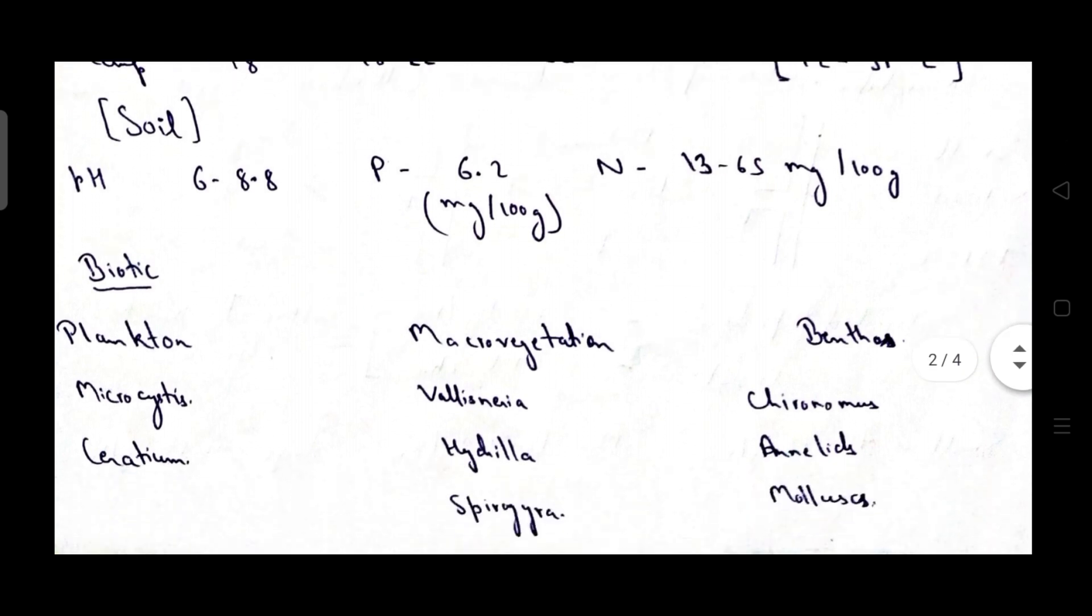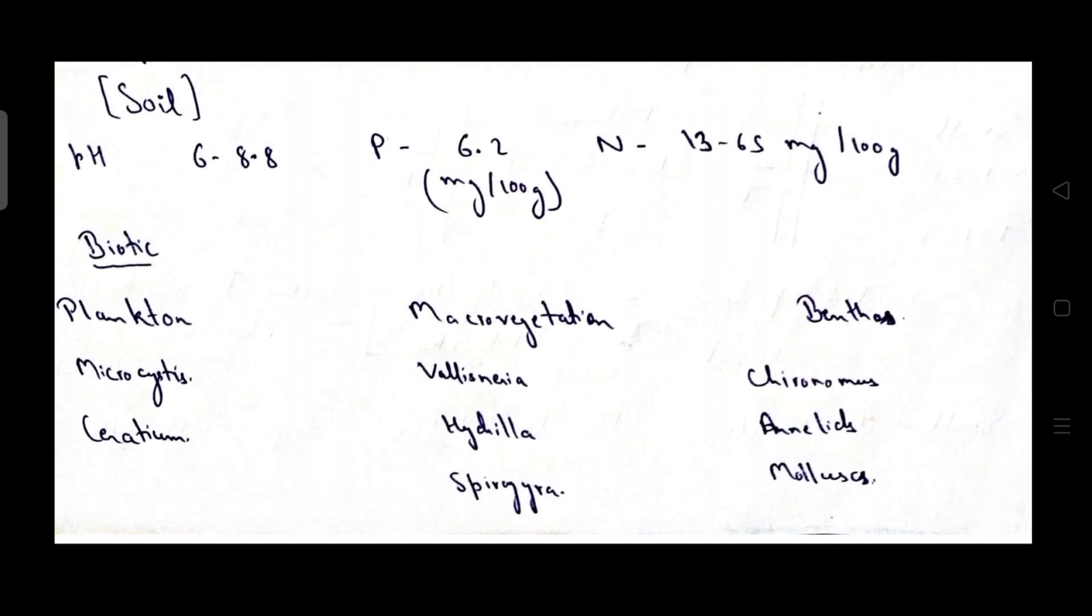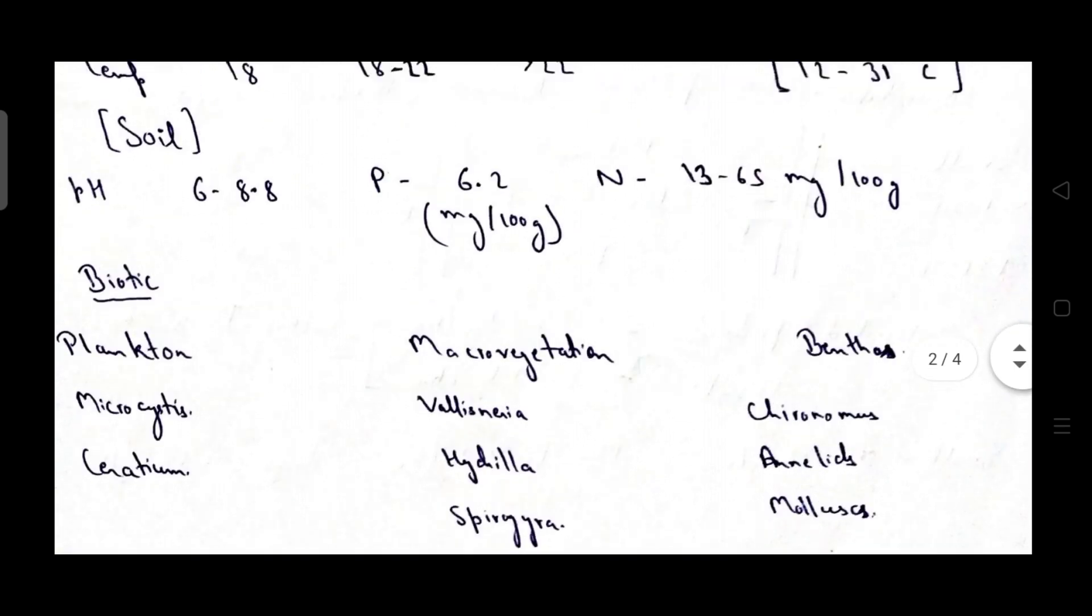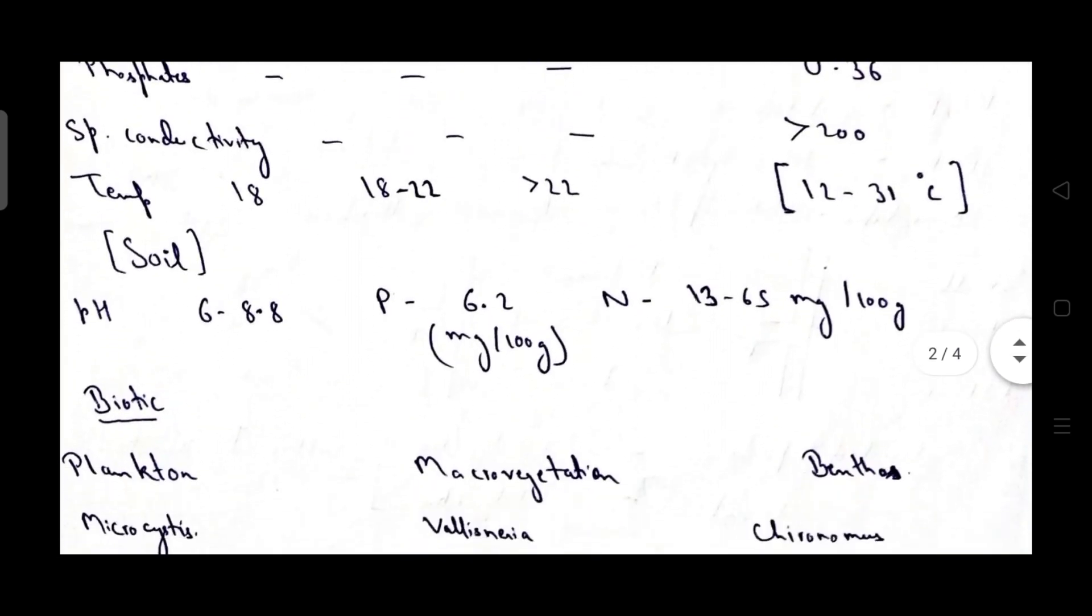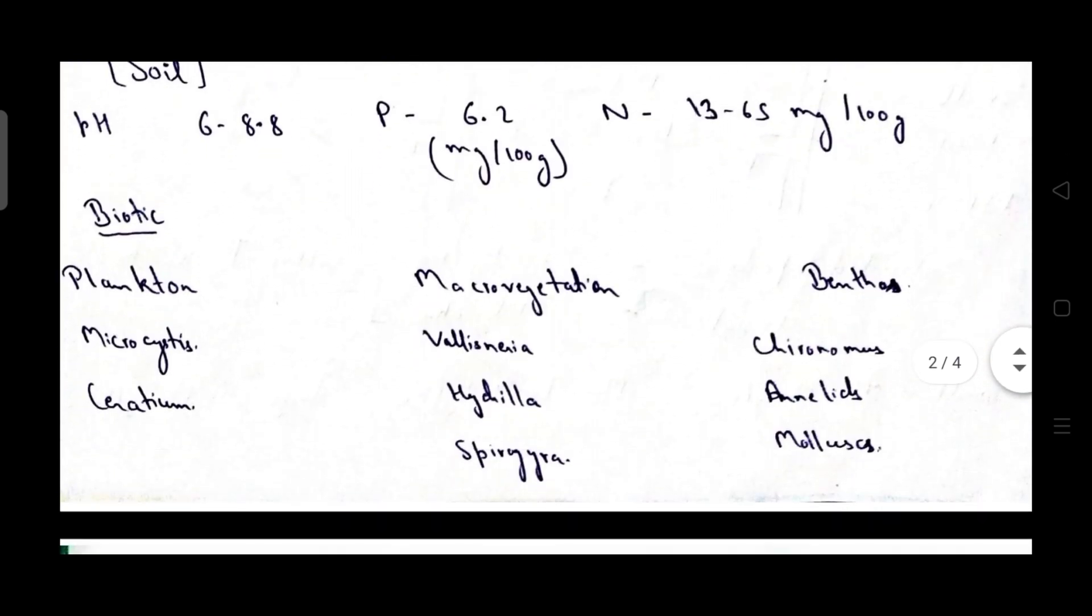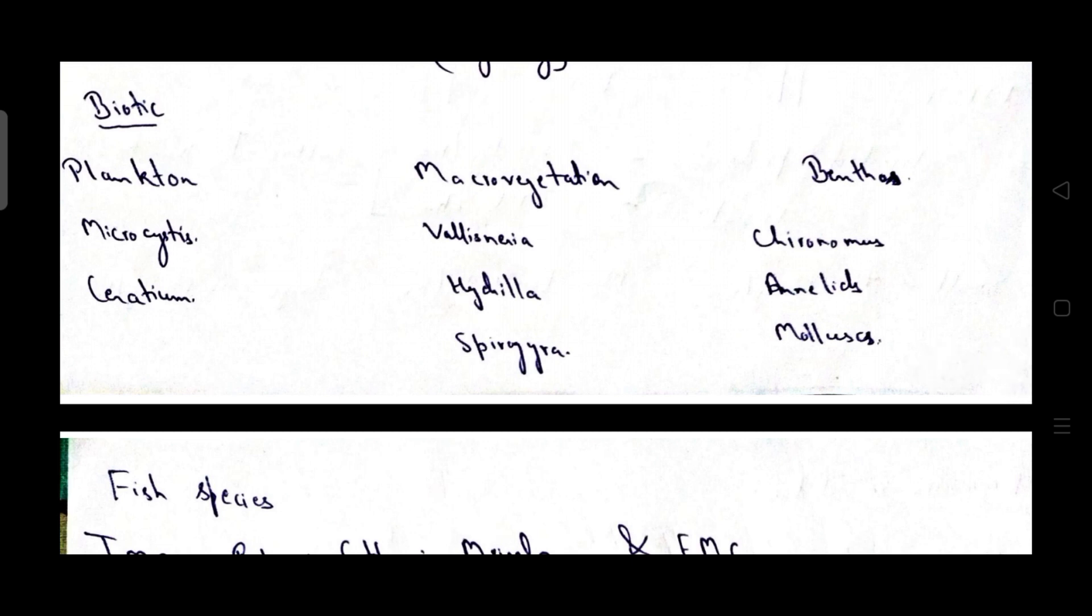Then coming to soil, the pH necessary is 6 to 8.8, phosphorus 6.2 and nitrogen 13 to 65 mg per 100 gram. So these were the data for water and soil parameter in case of reservoir productivity.